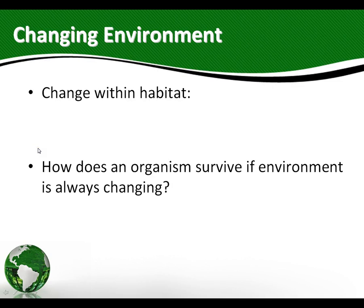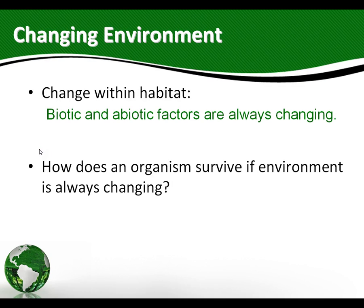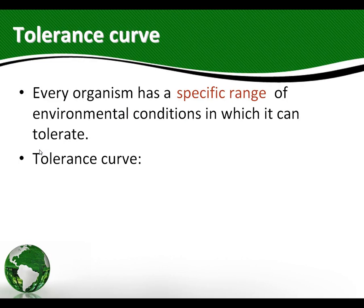Organisms change within their habitat, and their habitats are constantly changing. So how does an organism survive if its environment is always changing? Well, if you go back to those characteristics of life, one of the things that makes something a characteristic of living things is that every living thing responds to changes in its environment. Within that change in the environment, every organism has a specific range of environmental conditions in which it can live.